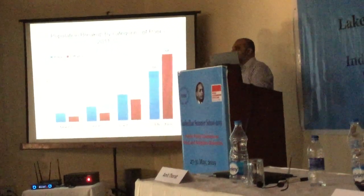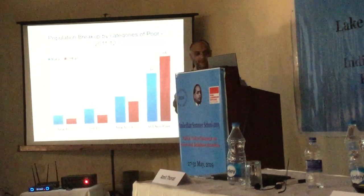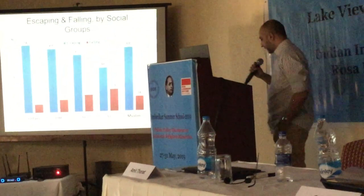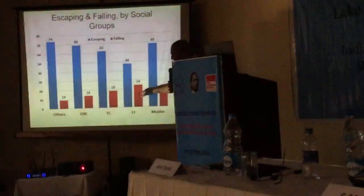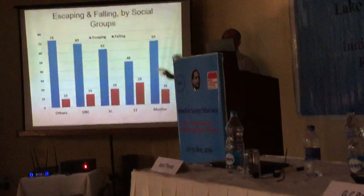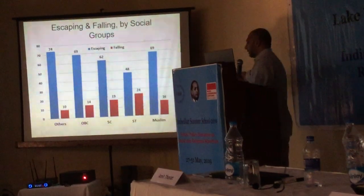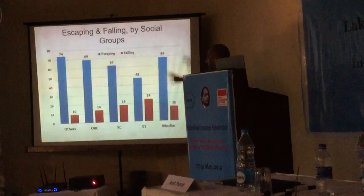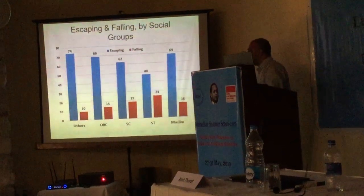Our policy approach treats the poor as a homogeneous group. But when we break it by social groups, rates of escape from poverty are systematically lower and rates of falling into poverty are systematically higher for Adivasis and Dalits. There is a clear disadvantage: the transient poor — those escaping and falling back — are vulnerable to shocks.